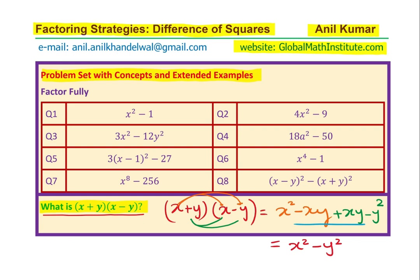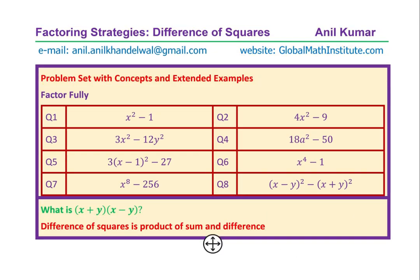Therefore, we get the expression equal to x squared minus y squared. That means x squared minus y squared can be factored as x plus y times x minus y. That is the background on this topic. So, difference of squares is the product of sum and difference.